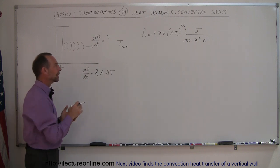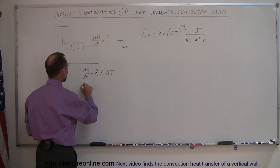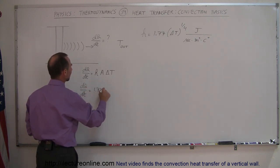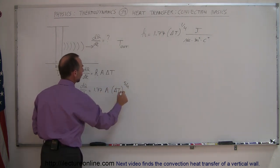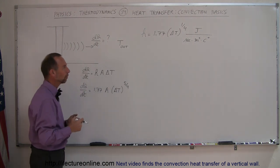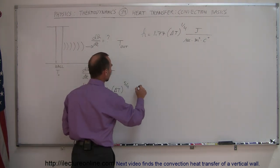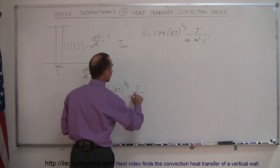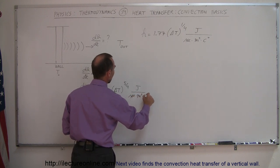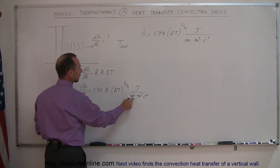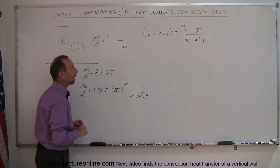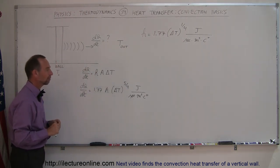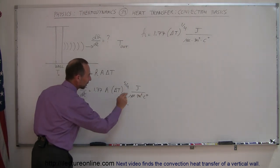If we plug that in, we can say that dq/dt equals 1.77 times the area times delta T to the five-fourths power. One-quarter plus one would be five-fourths, and that would be in terms of joules per second per meter squared times centigrade degree. The meter squared cancels with the area and the centigrade degree cancels to some extent. We do have to worry about the five-fourths relative to the units, but don't worry about that.